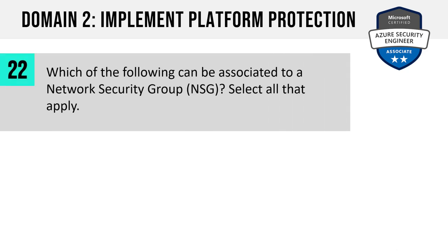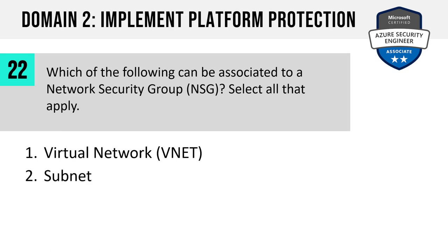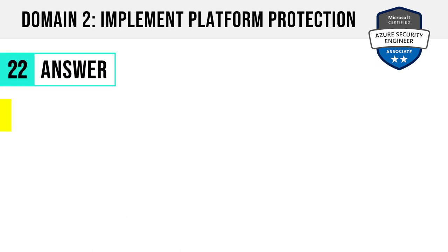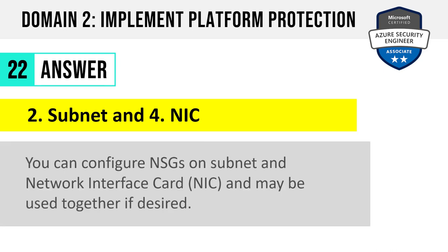Number 22. Which of the following can be associated to a network security group? A virtual network, a subnet, a resource group, or a network interface card? Select all that apply — the answer is two of these. The answer is two: subnet, and four: NIC. You can configure NSGs on a subnet and a network interface card, and you can use these two together if desired as well.